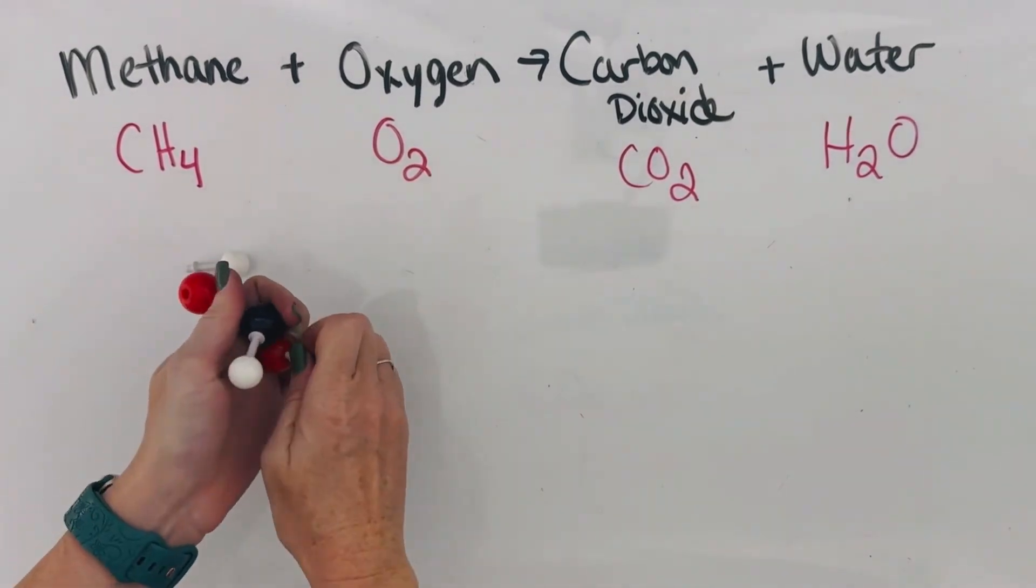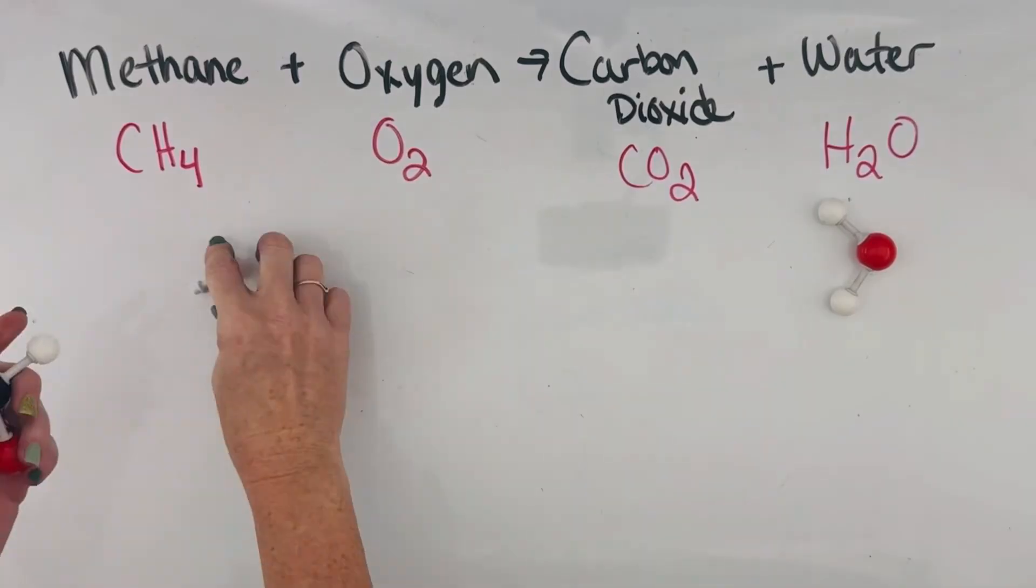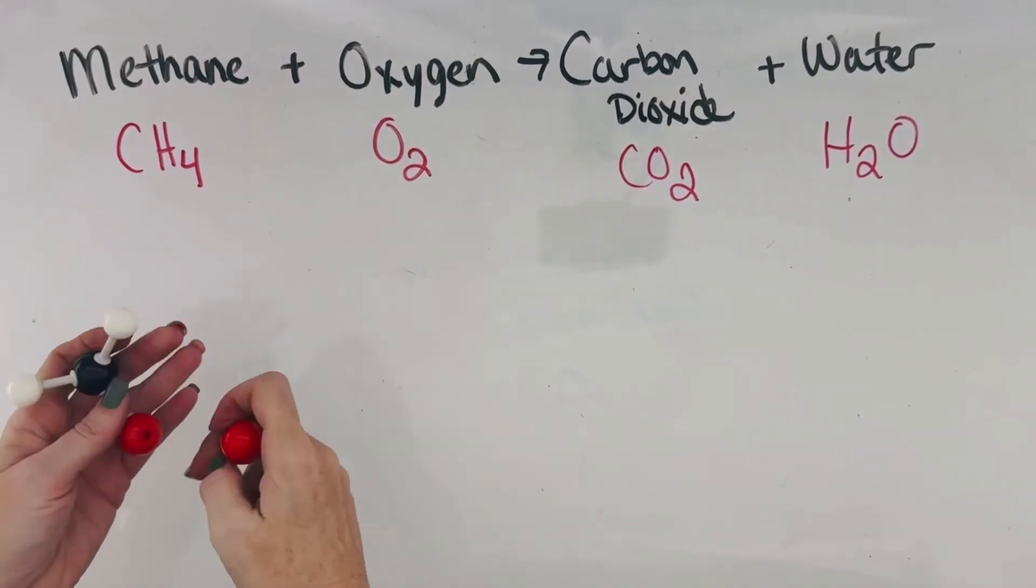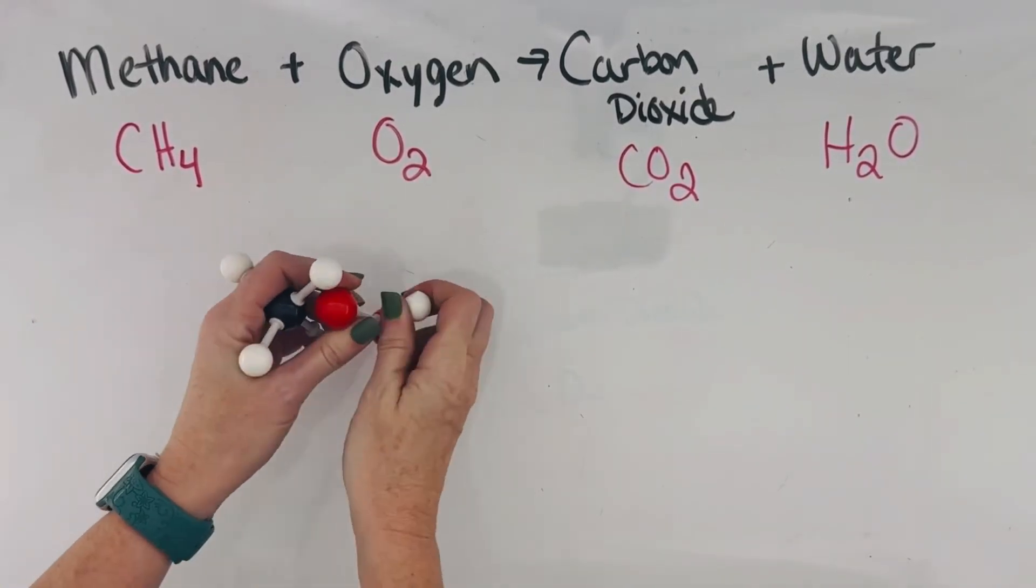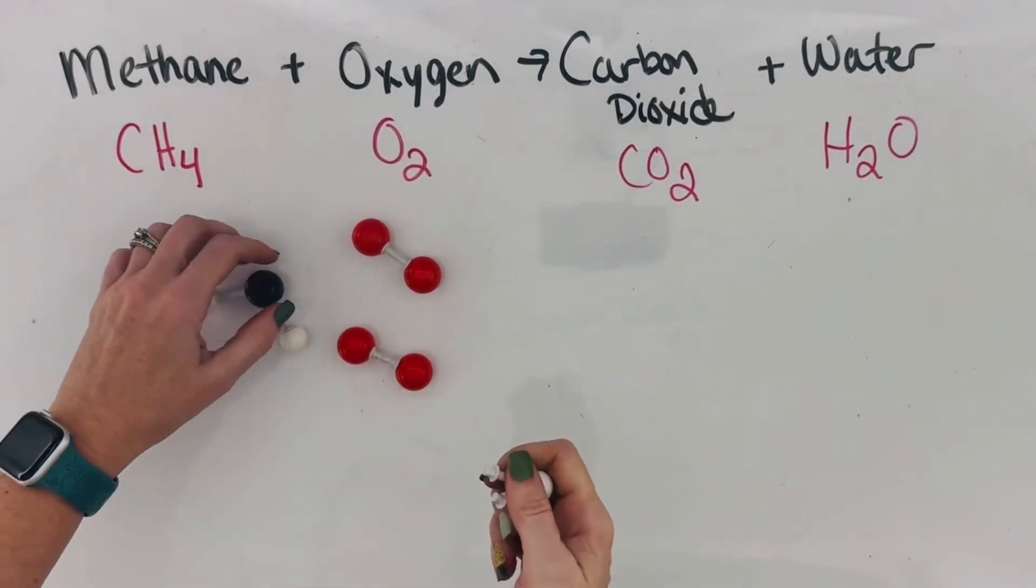So what we find is that as we rearrange these atoms, we actually need an extra oxygen molecule so that this whole reaction can happen completely. So here we go, two oxygens.